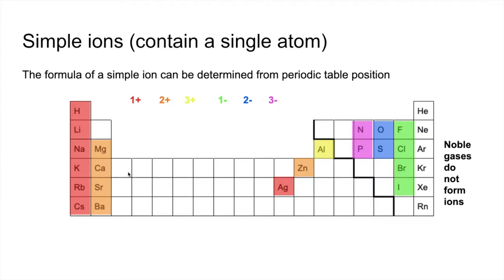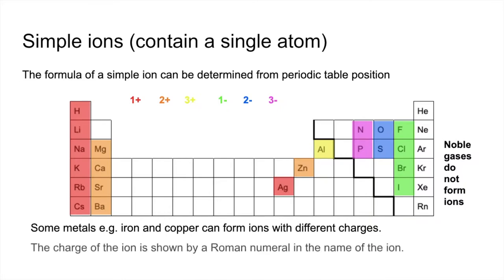So we'll just finish this slide by talking a little bit more about some transition elements. One of their properties is the fact that they can form ions with different charges. For example, iron and copper. We're going to look at those as our examples. So the charge of the ion is shown by a Roman numeral in the name of the ion.